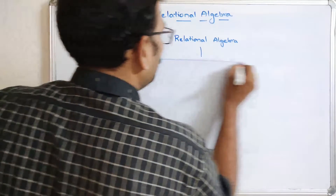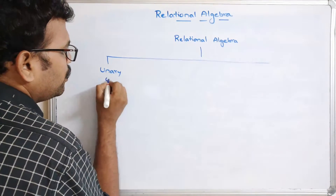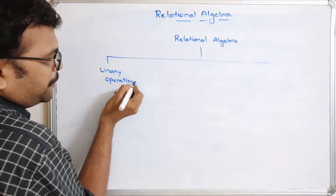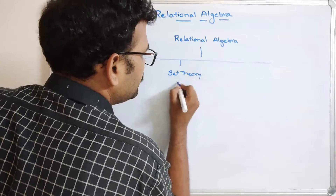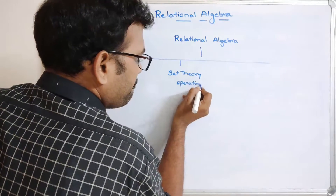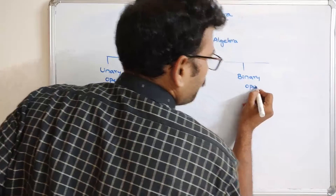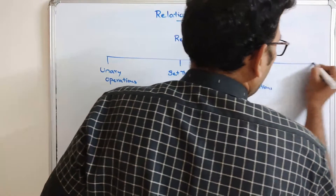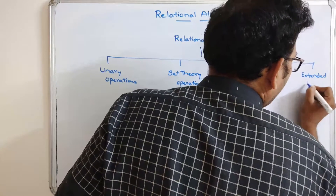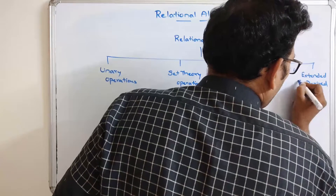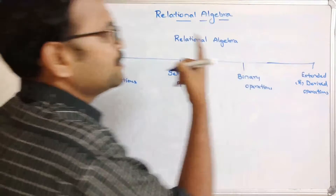The different operations in relational algebra are: first, unary operations; second, set theory operations; third, binary operations; and fourth, extended or derived operations.